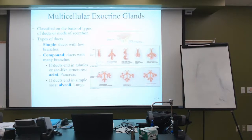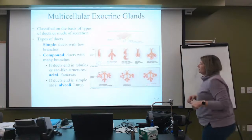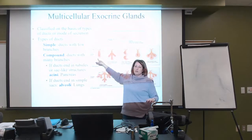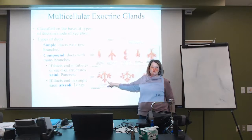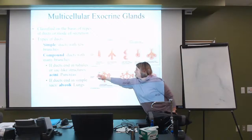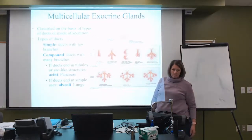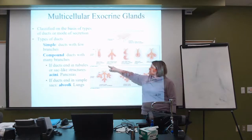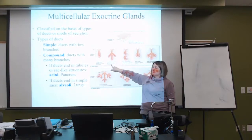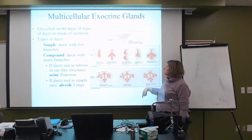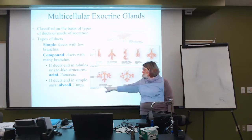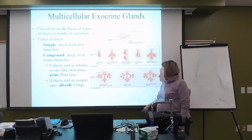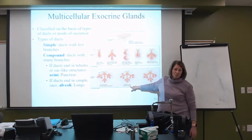Getting into multicellular glands, it's more complicated. The ducts can be simple — which you should associate with 'one layer' — or compound. Simple means very few branches occur; compound means lots of branches from branches. Examples include glands in the stomach and colon, glands in the small intestines, sebaceous glands and mucous glands in the skin, and mammary glands found in one area of the body.